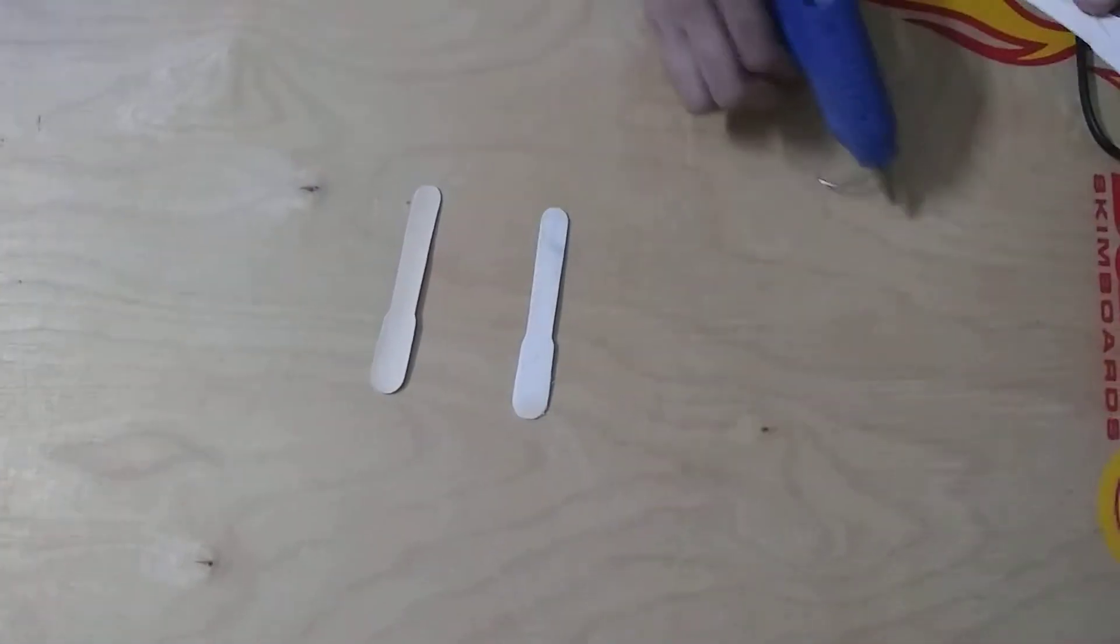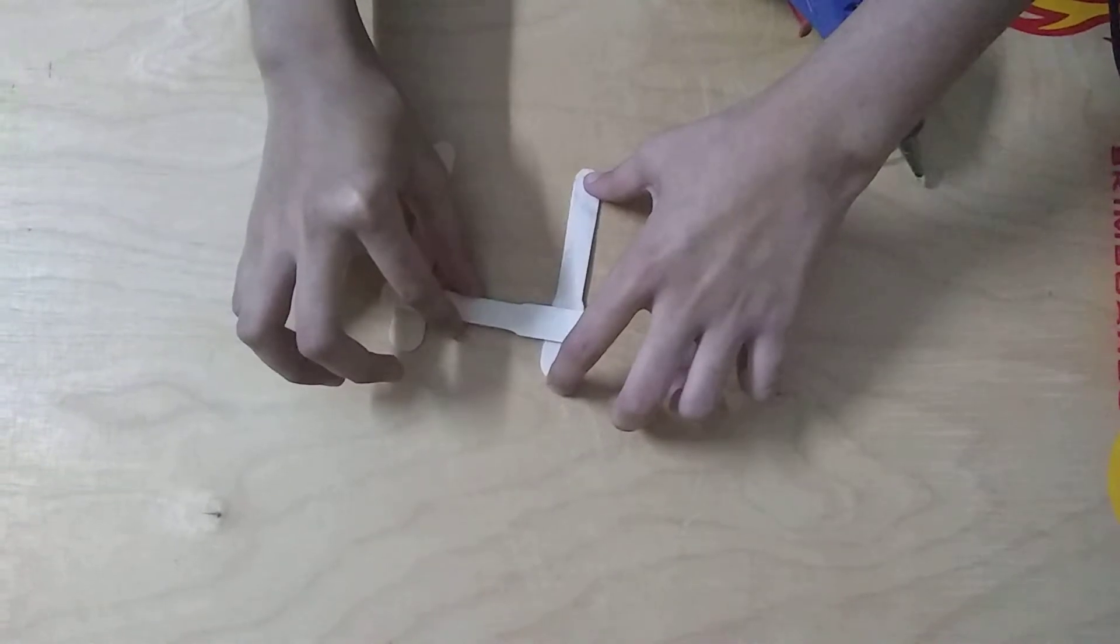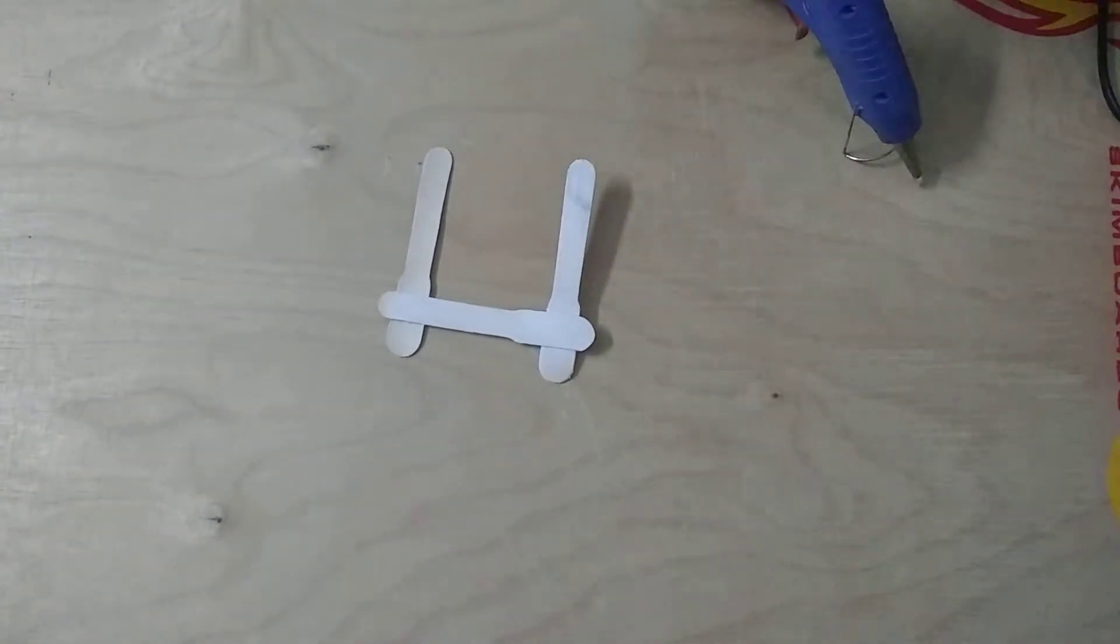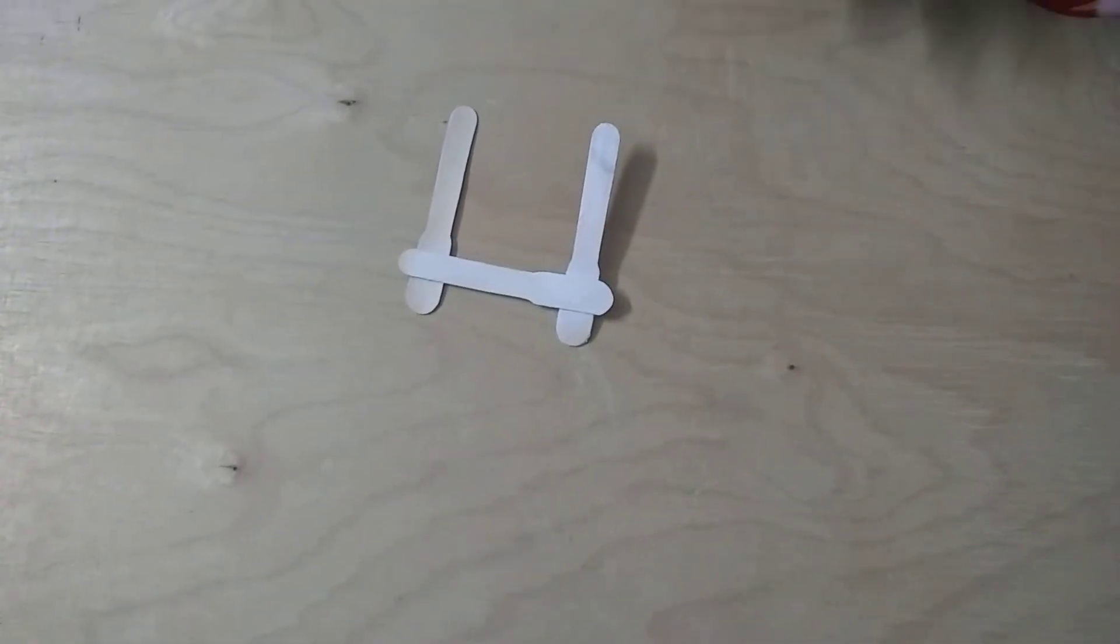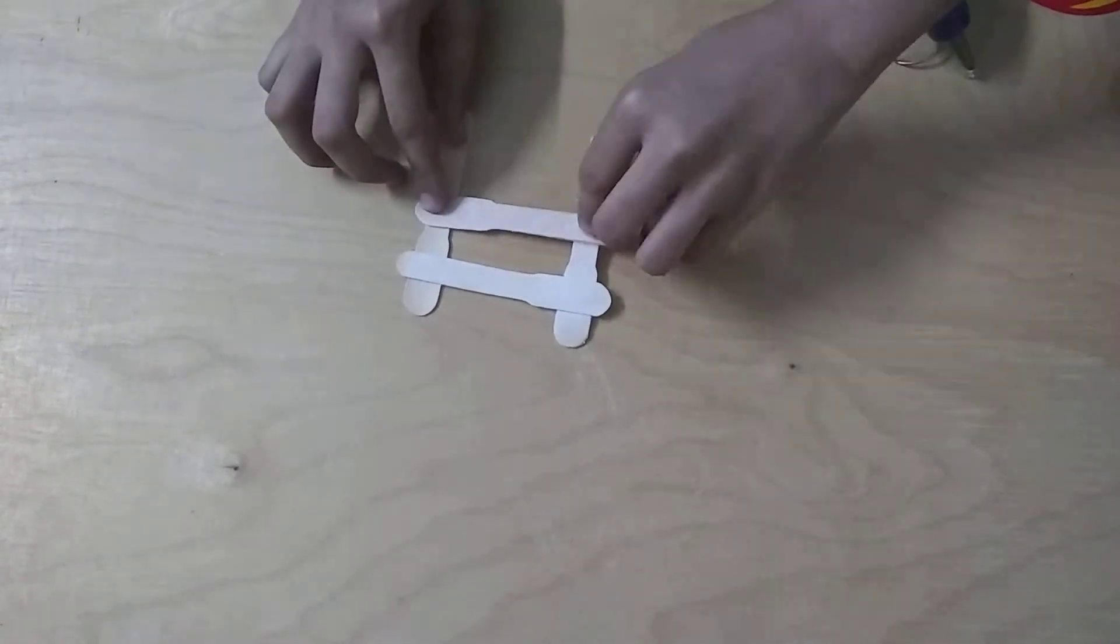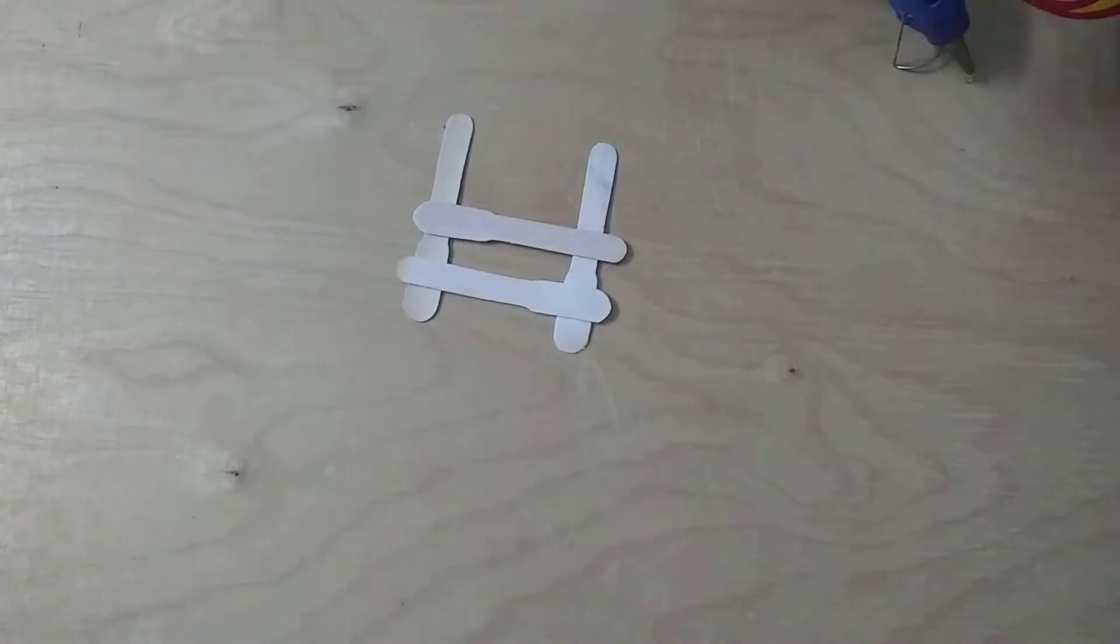Glue it on the side and then glue the ice cream stick as I am doing. Again glue it and stick it as in the previous step.